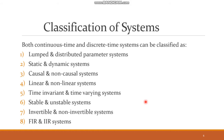Continuous time and discrete time systems can be further broadly classified into the following categories: lumped and distributed parameter systems, static and dynamic systems, causal and non-causal systems, linear and non-linear systems, time invariant and time varying systems, stable and unstable systems, invertible and non-invertible systems, and FIR and IIR systems.